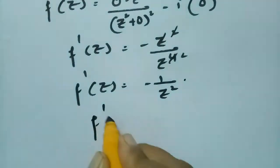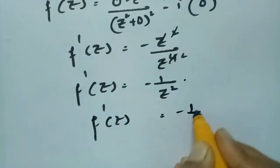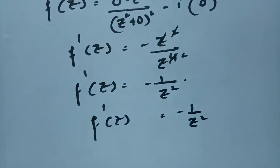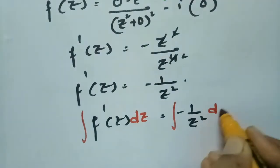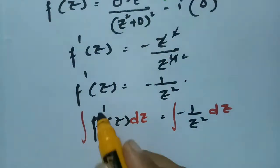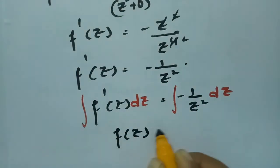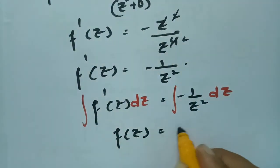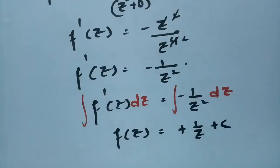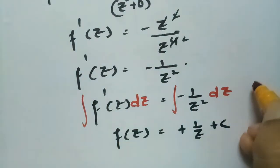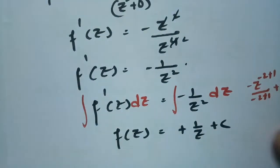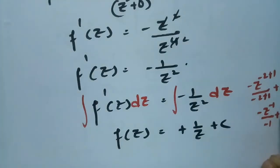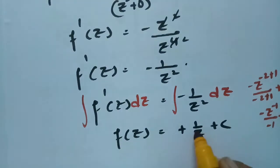Now f'(z) = -1/z². Integrating both sides, the integration and derivative cancel, giving f(z) = -z^(-2+1)/(-2+1) + c = z^(-1)/(-1)·(-1) + c = 1/z + c.